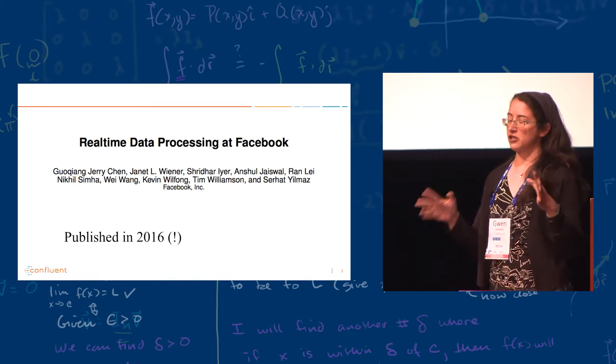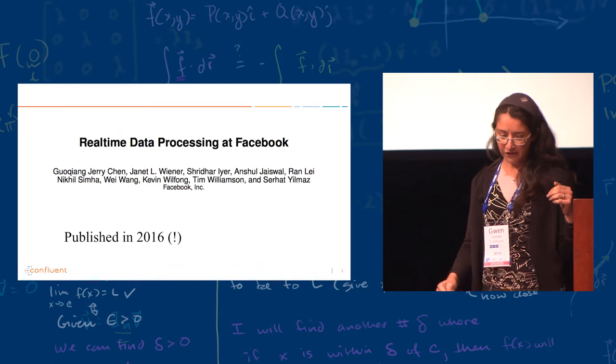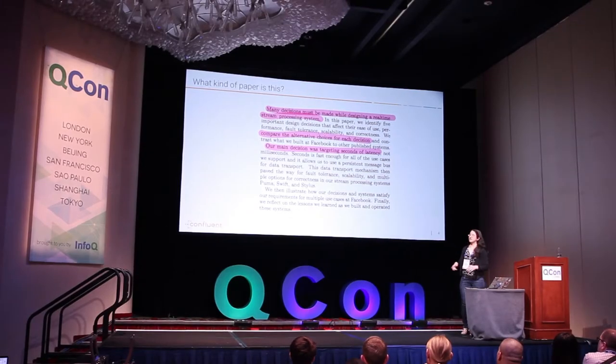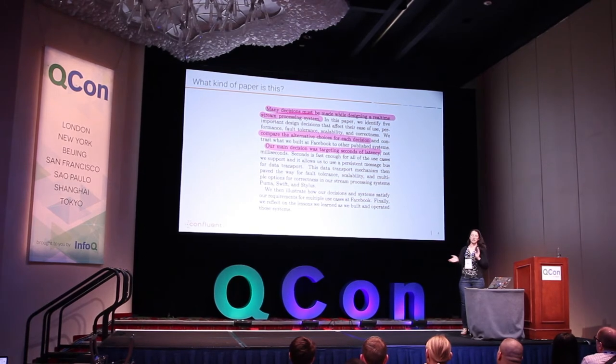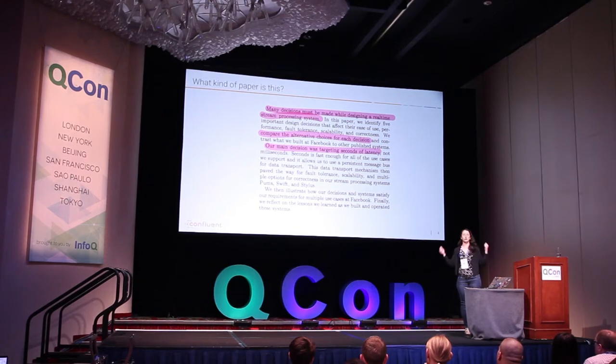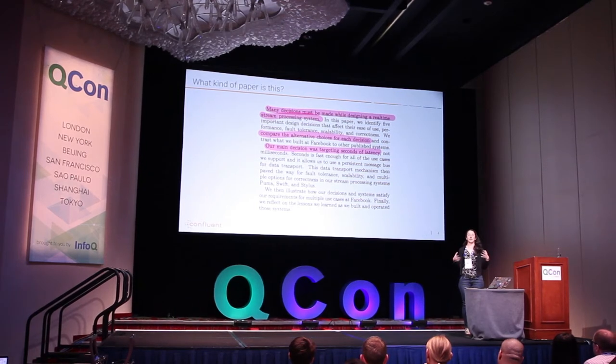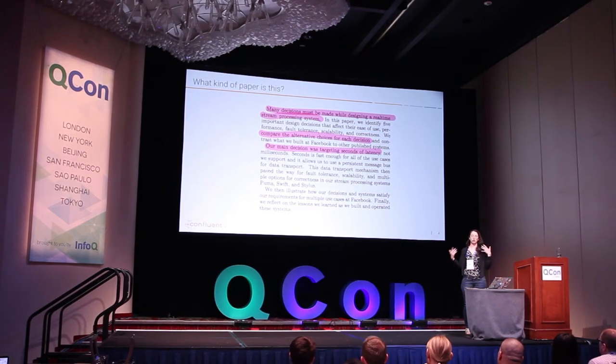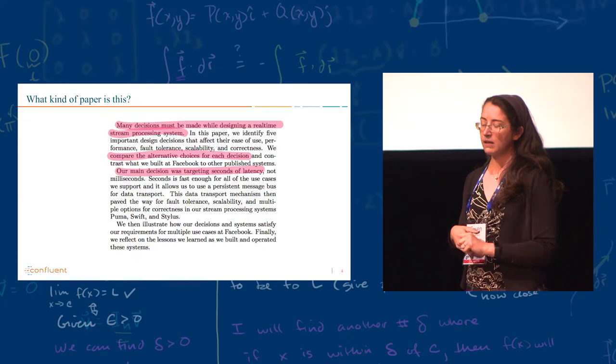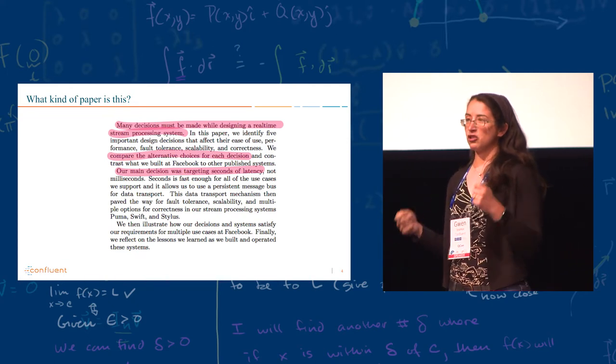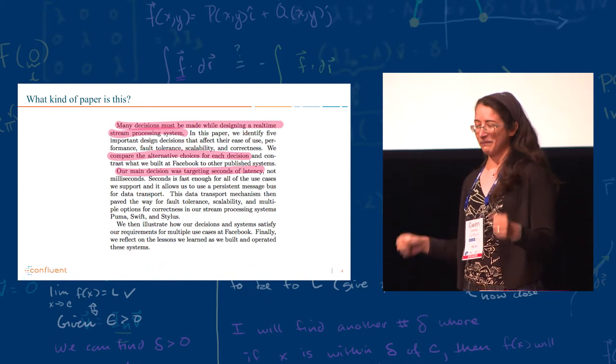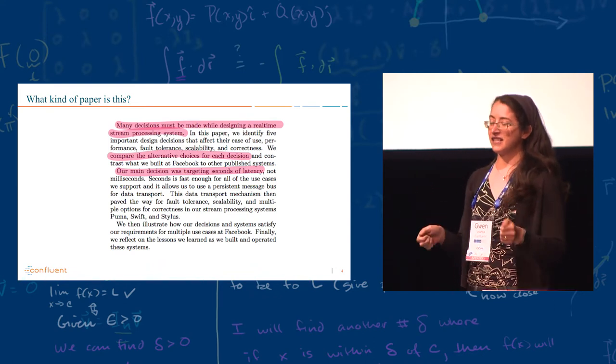And the first thing you do when you start reading a paper is figuring out what kind of paper is it? What is it going to be about? And they made it easy. Right there, second paragraph of the abstract, this is about making decisions. So we are about to build a real-time stream processing thingy, what type of decisions we need to make. And given those decisions, what were the options and how did we went around doing them?